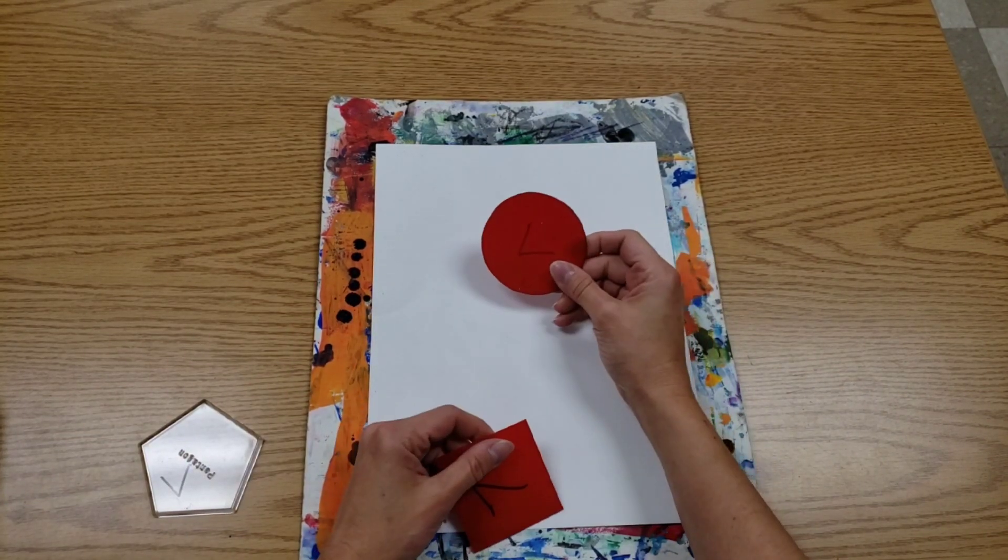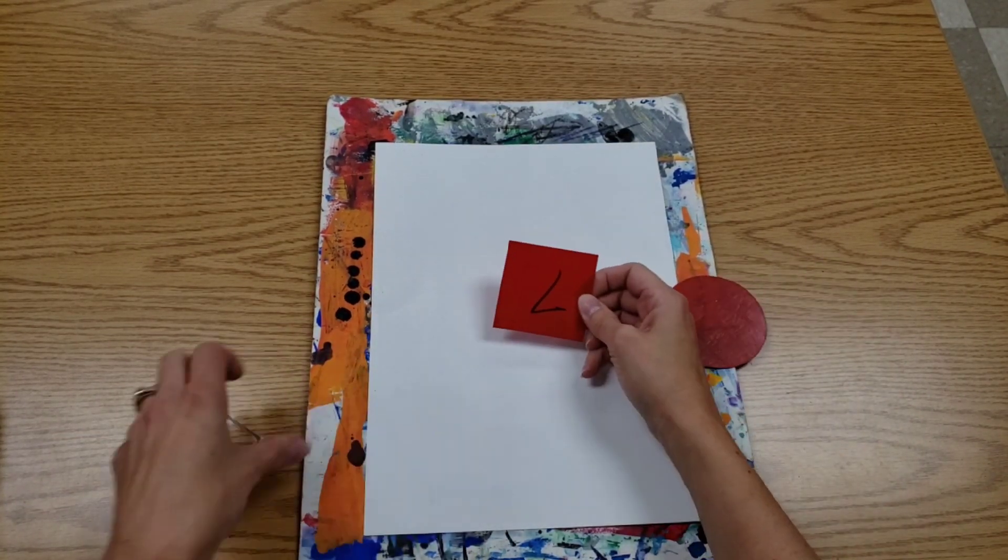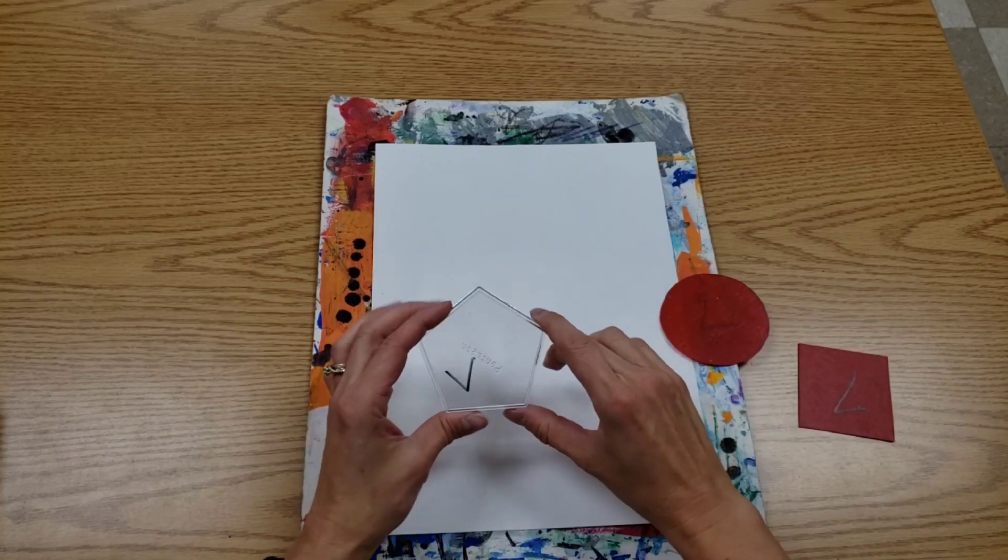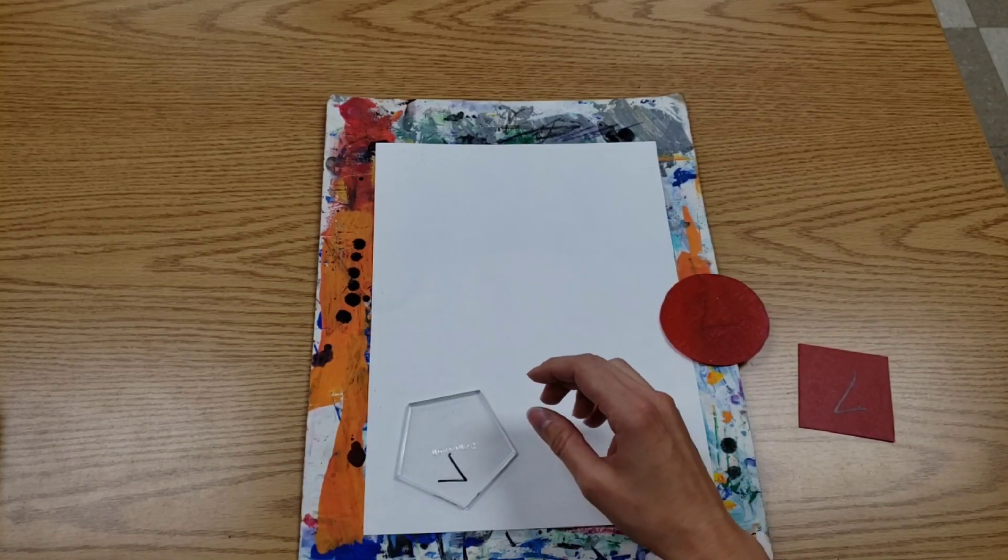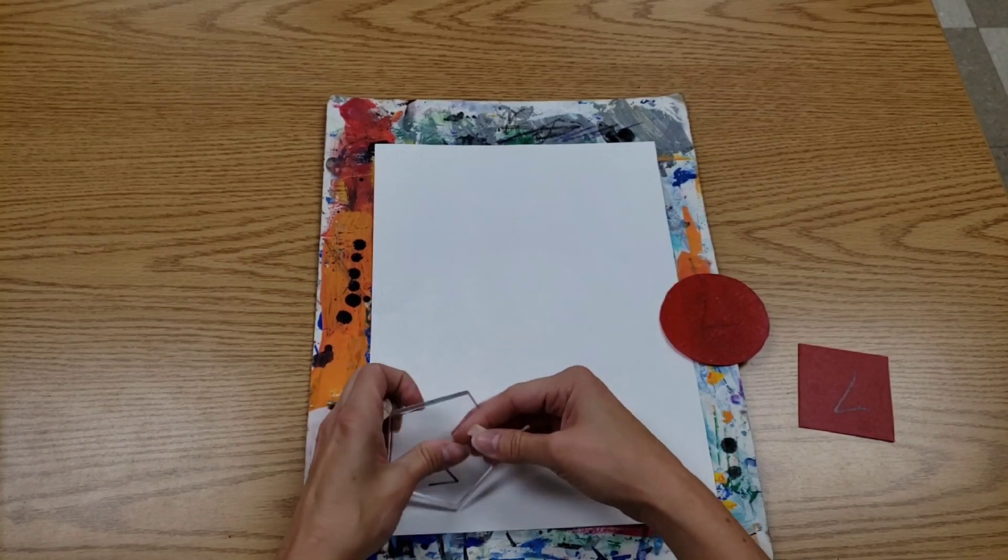For example, I have a circle, I have a square, and I have a pentagon. Three shapes and three pieces of tape.